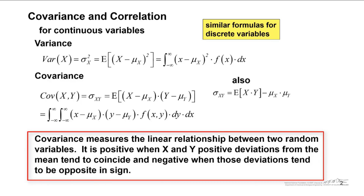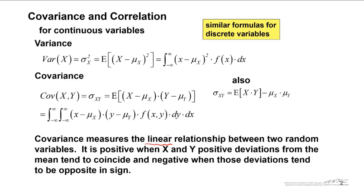And that's an important word — linear. Covariance measures the linear relationship between two random variables. It is positive when positive deviations in x and y coincide, and covariance is negative when those deviations tend to be opposite in sign.